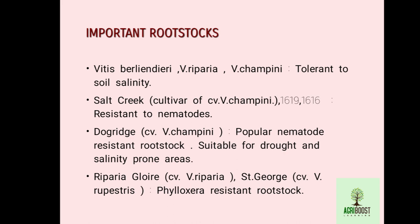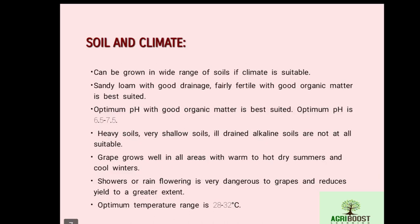Dog Ridge is a famous and popular rootstock — it is a nematode-resistant rootstock suitable for drought and saline-prone areas. Riparia Gloria cultivar Vitis riparia and Saint George cultivar Vitis rupestris are two phylloxera-resistant rootstocks.